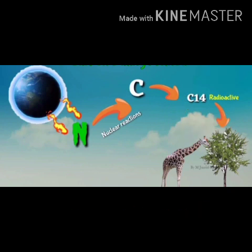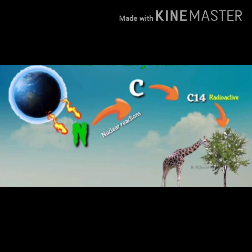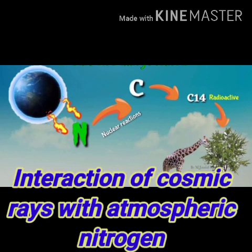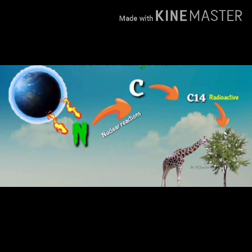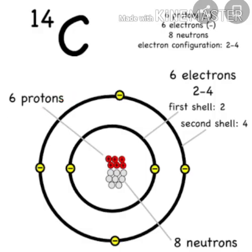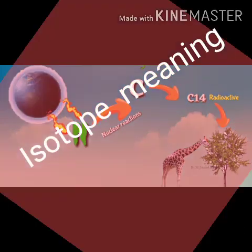C14 is the isotope of carbon-12. Due to the interaction of cosmic rays with atmospheric nitrogen, a nuclear reaction converts N14 into a new atom with 6 protons and 8 neutrons, which is C14 — a radioactive substance. Keep in mind: atomic number of carbon is 6 and atomic mass number of carbon-12 is 12, while atomic number of nitrogen is 7 and atomic mass number of nitrogen is 14.